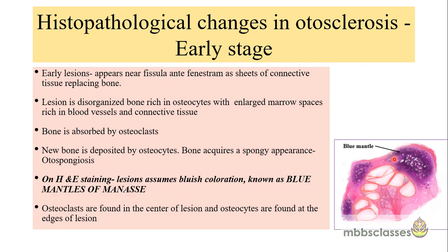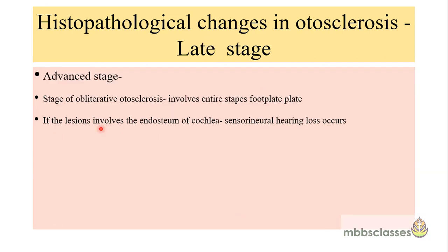In the early lesion of the otosclerotic foci, the lesion appears blue in color on H&E staining — this is called the blue mantle. Osteoclasts are found in the center of the lesion and osteoblasts at the edges. In the late part of the disease, the foci has less vascularity with more bone, and with H&E staining it is stained red. If the lesion involves the endosteum of the cochlea, it leads to sensorineural hearing loss.